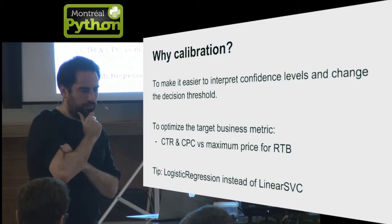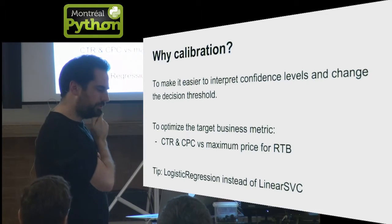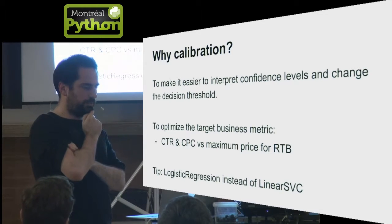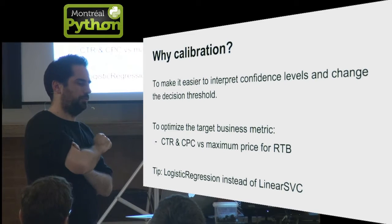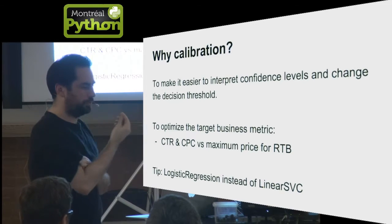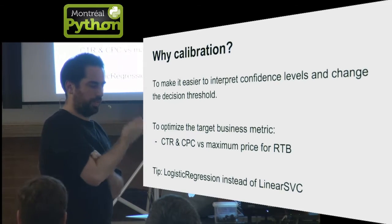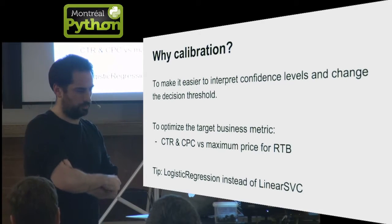For instance, if you're doing ad auctions on a real-time bidding platform, you want to estimate the bid price. To do so, you know the cost per click, and what you want to do is estimate for a specific user and a specific ad the click-through rate, the probability of click. This is the real probability that you want to calibrate, because it's directly related to the price that you want to bid on the auction.